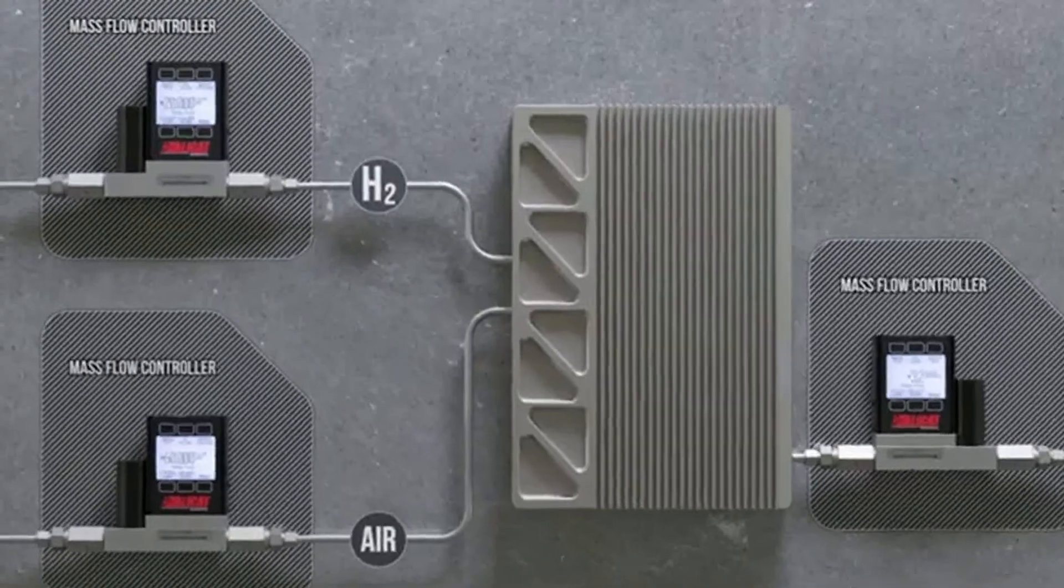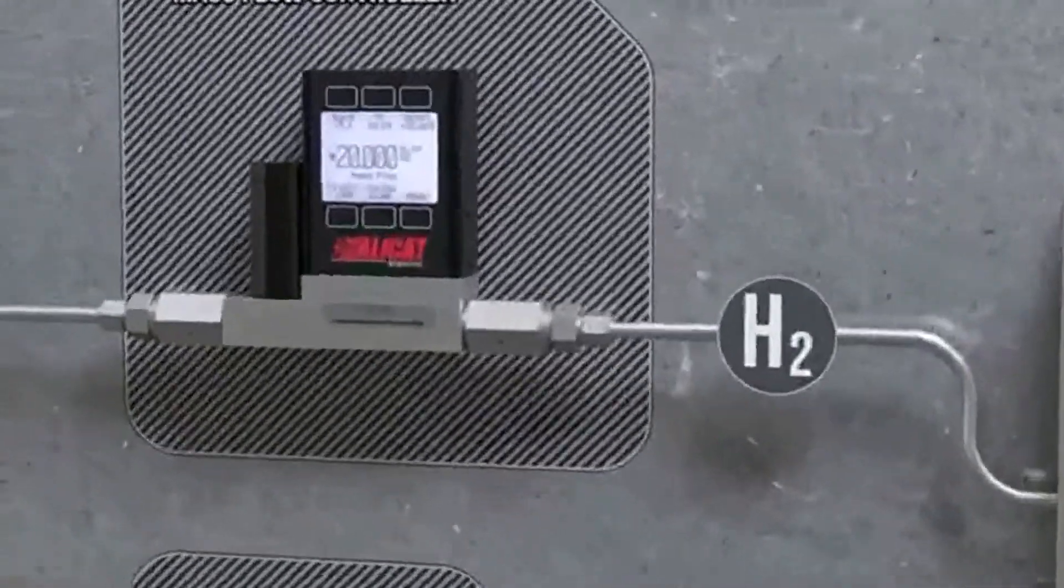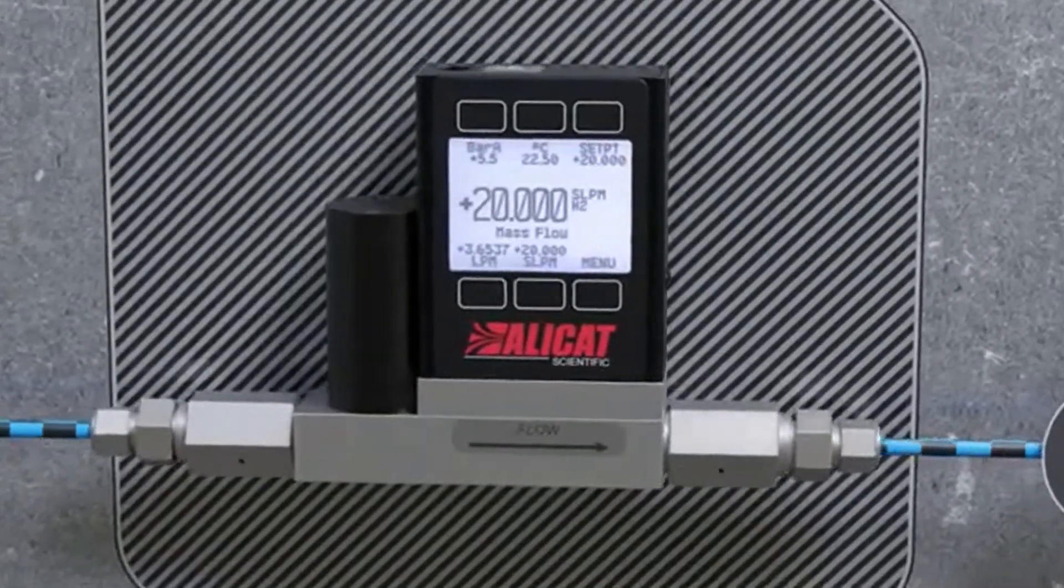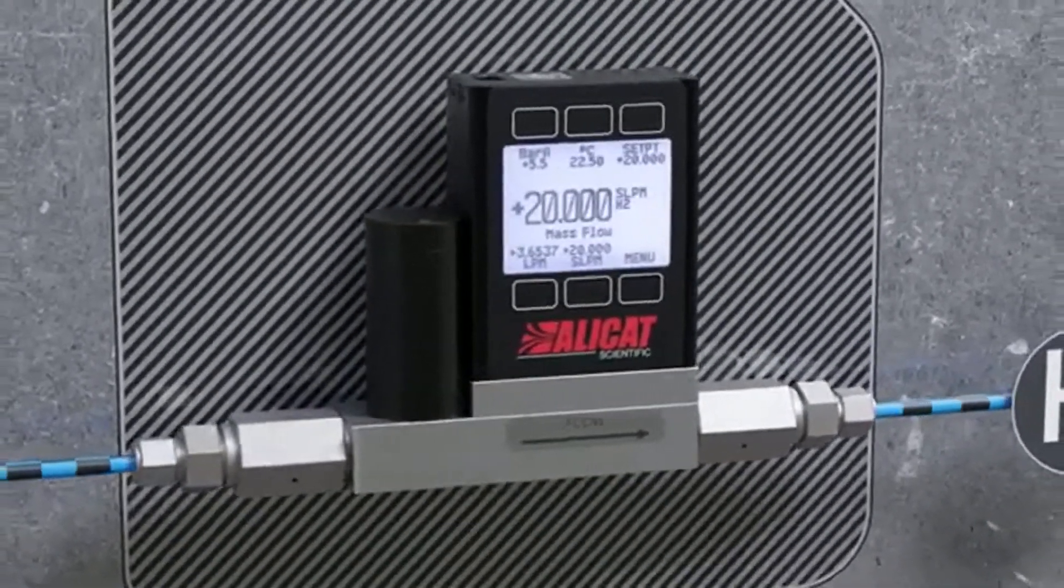Use a single Allocat instrument to regulate mass flow while monitoring pressure and temperature, or easily adjust the same instrument to regulate pressure while monitoring mass flow.